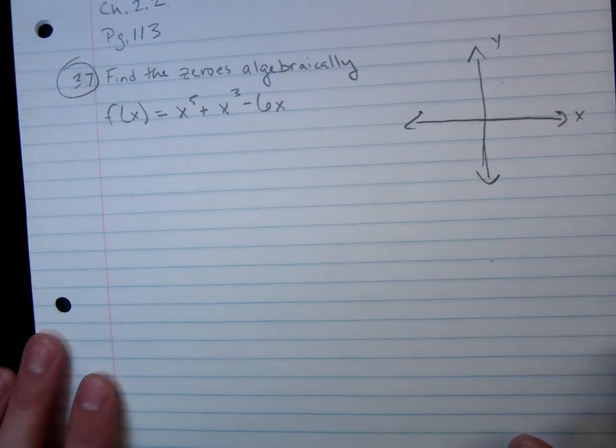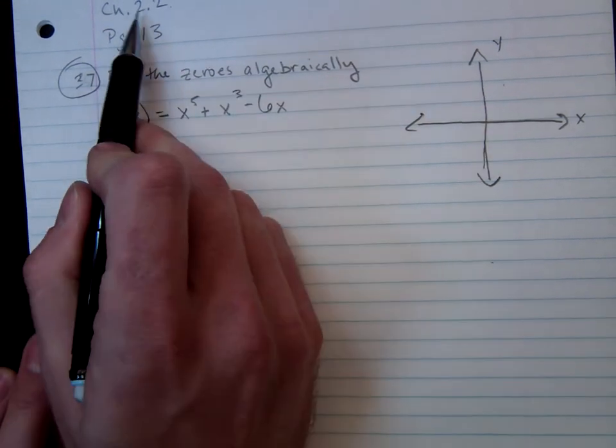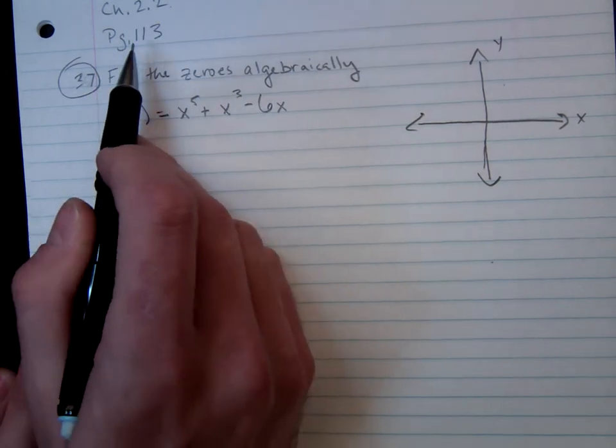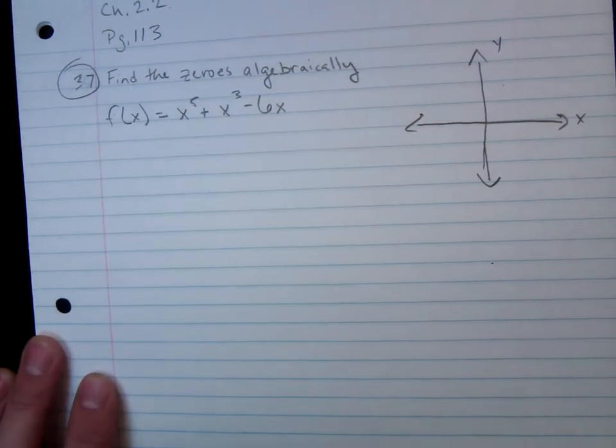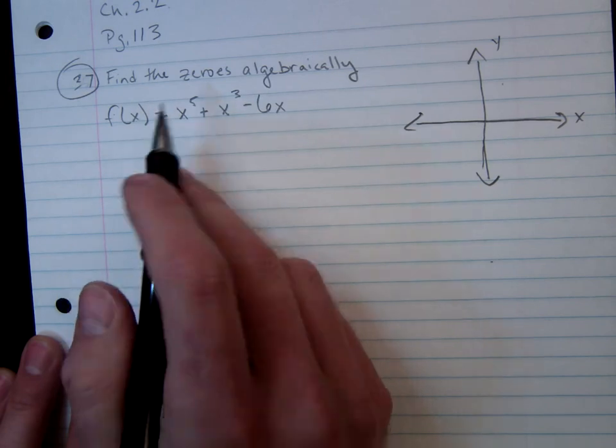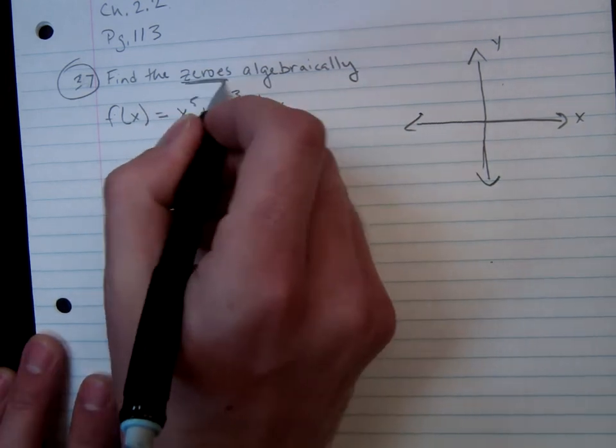All right, so this is problem number 37 out of chapter 2.2, page 113 in the book. For this problem, they asked us to find the zeros algebraically.